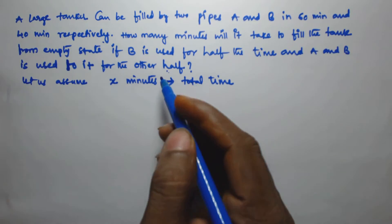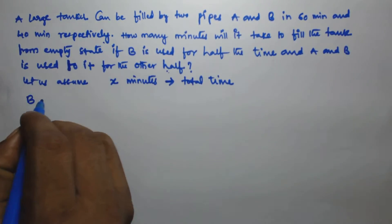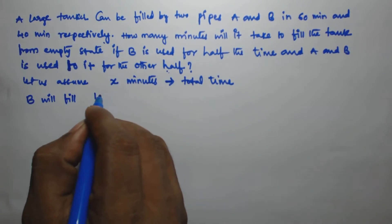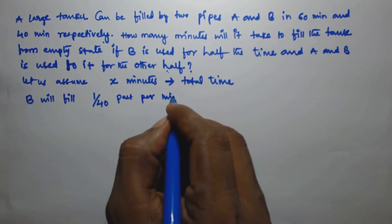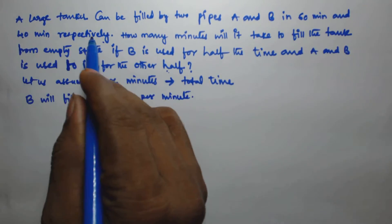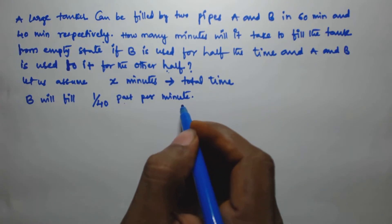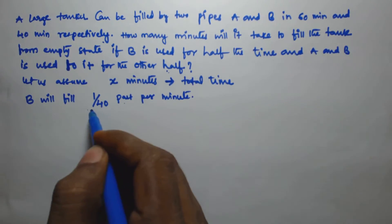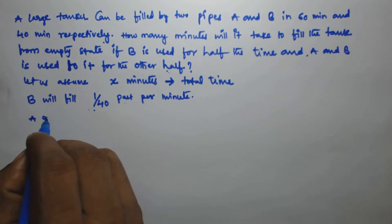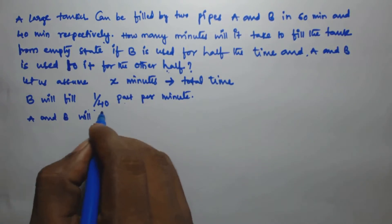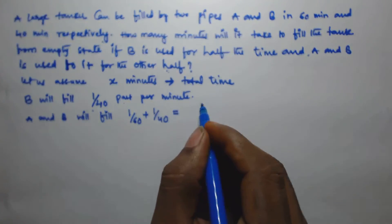It is given that A and B fill the tank in 60 minutes and 40 minutes respectively. So B will fill 1/40th part of the tank per minute, because B takes 40 minutes to fill the full tank. B is used for the first half time. The remaining half time is used by A and B together, so A and B will fill 1/60 plus 1/40.